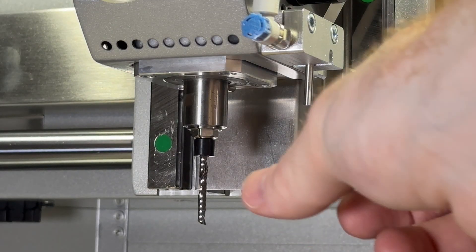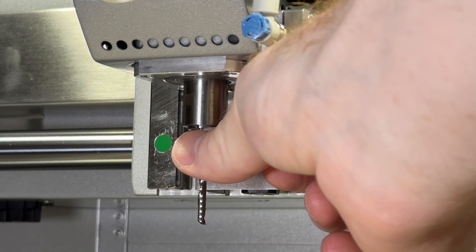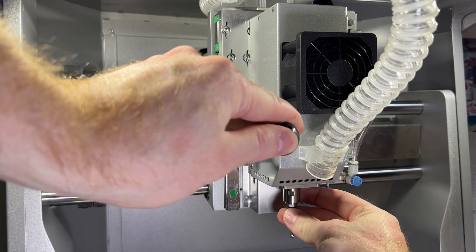First, carefully hold the bit that's currently loaded, if one is loaded, around the bit collar. Next, lower the tool change lever all the way to release the bit from the spindle collar.